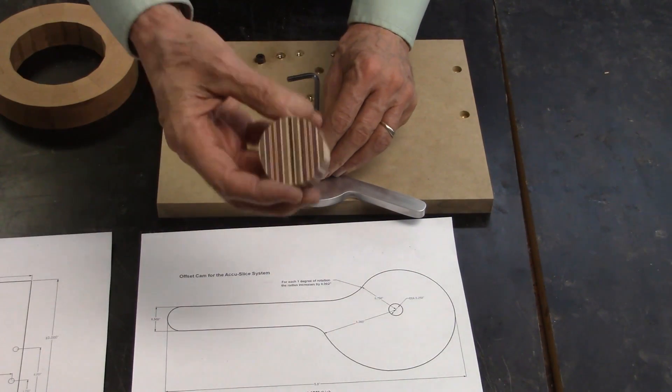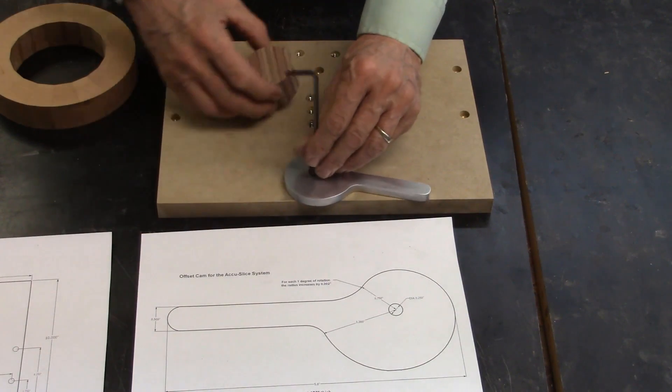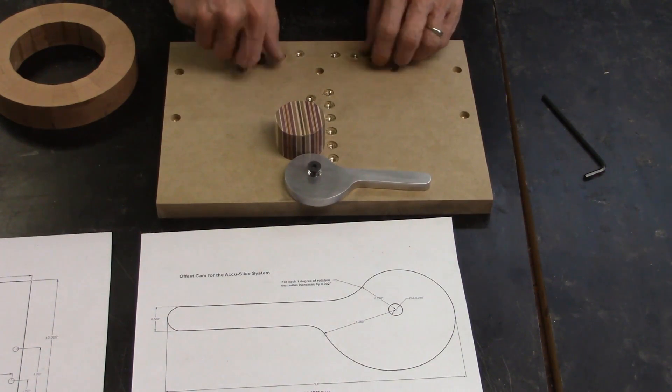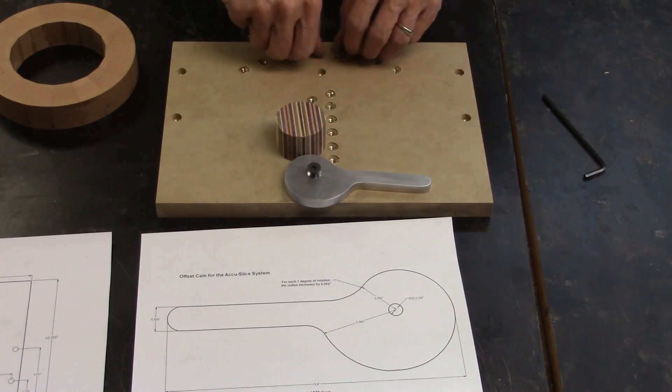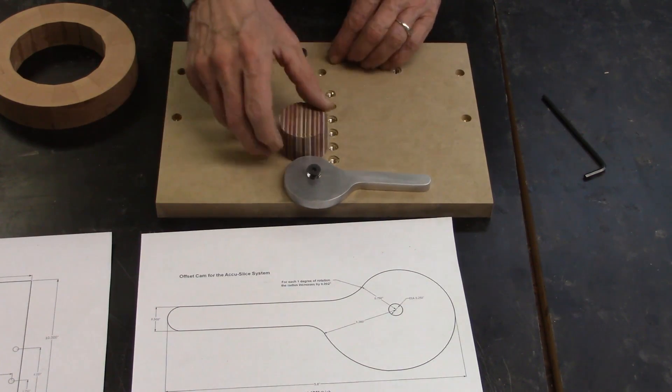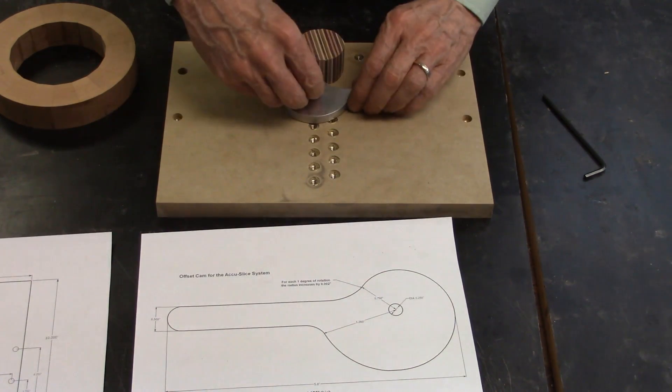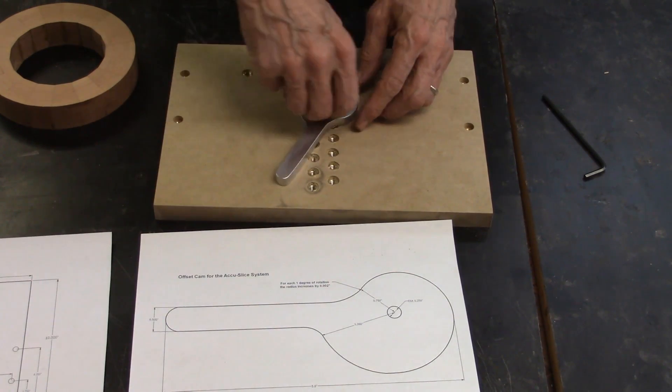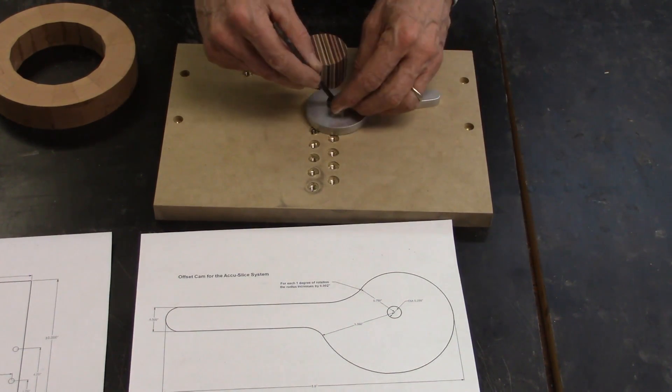And this is the smallest piece I'll do, which is just about an inch and a half in diameter. And when I do that, I move these screws to the inside.